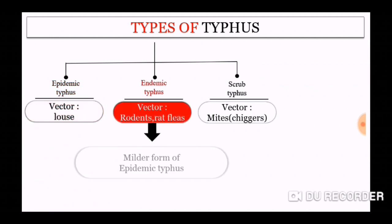Next, we will discuss about endemic typhus. The major vectors spreading endemic typhus include rodents and rat fleas. It is a milder form of epidemic typhus.